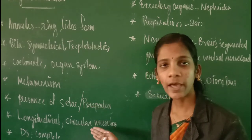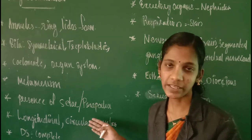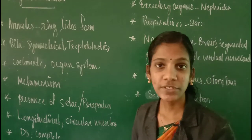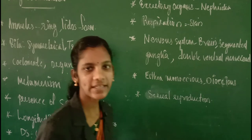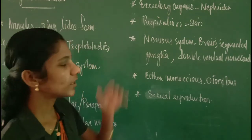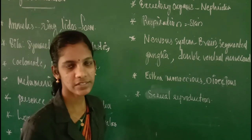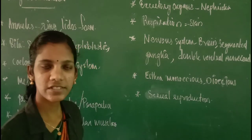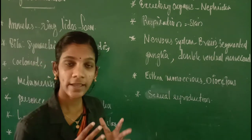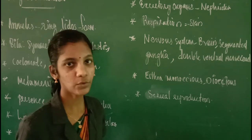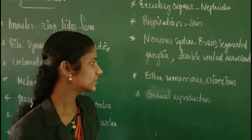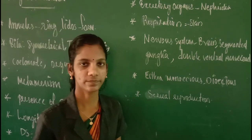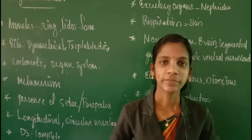They have longitudinal and circular muscles for locomotion — especially earthworm has both to facilitate the locomotion process. Their digestive system is complete with pharynx, esophagus, intestine, and stomach. Circulatory system is closed type. Respiration is mainly through skin — cutaneous respiration. Their nervous system consists of a brain, double ventral nerve cord, and different ganglia. They may be found in monoecious or dioecious form and are capable of sexual reproduction.